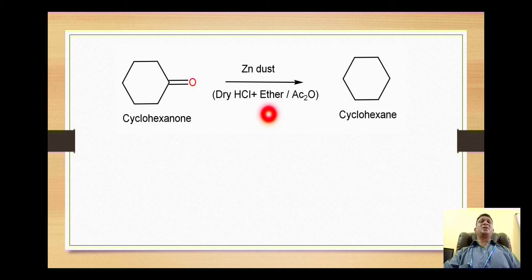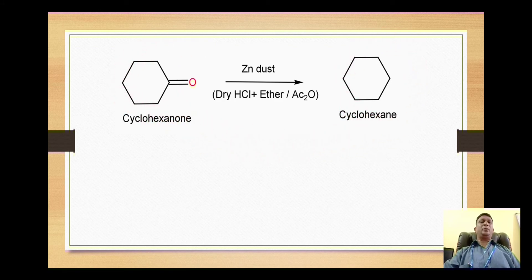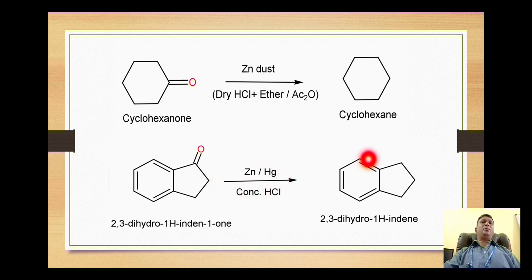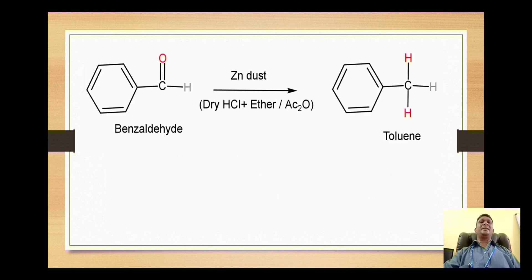In some conditions, ether can be replaced with acetic anhydride. The ultimate product is the formation of alkane from a ketone. For example, the ketone called 2,3-dihydroindanone on Clemmensen reduction will give formation of 2,3-dihydro-1H-indane. Here also the doubly-bonded oxygen is replaced with two hydrogens.